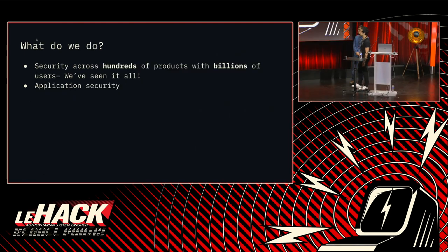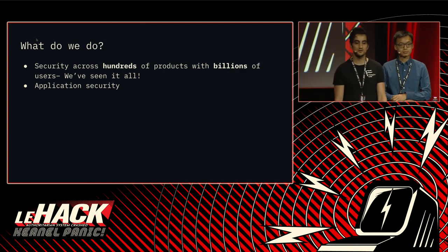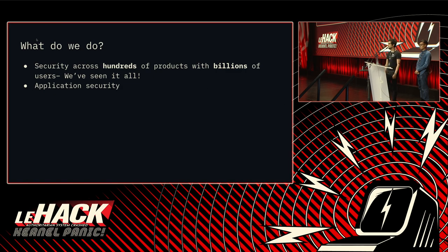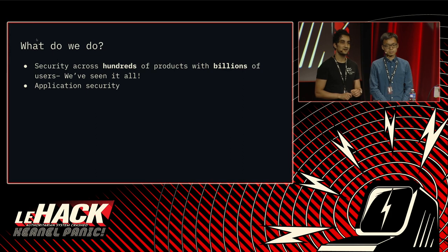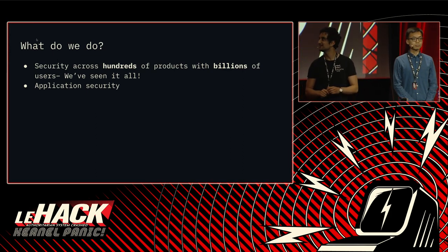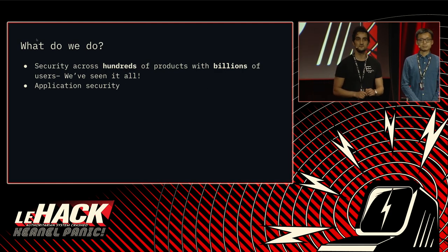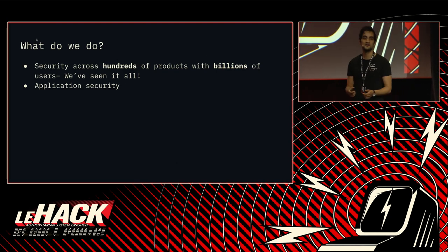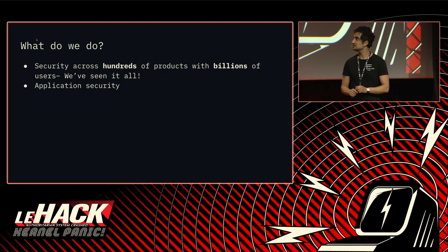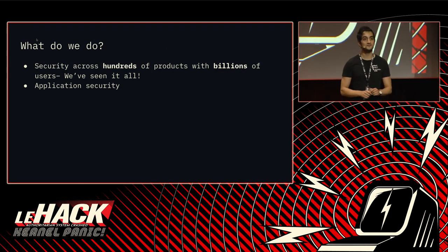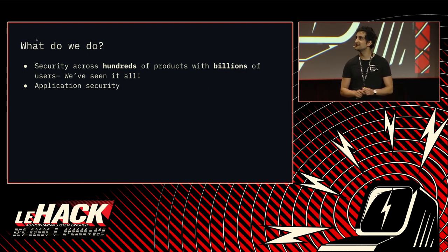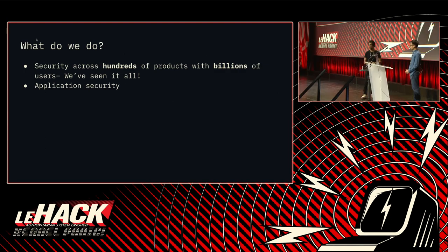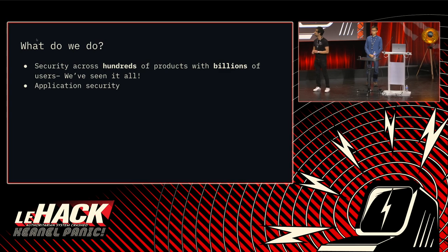So what do we do at Google? We're part of the information security team, which works pretty much across all the products — hundreds of products, billions of users. We're part of the application security team, and we like to say that we work on security by construction, meaning that we're trying to provide the right frameworks and platform for our software engineers to write code safely without really having to worry about security. Trusted Types is part of this effort.